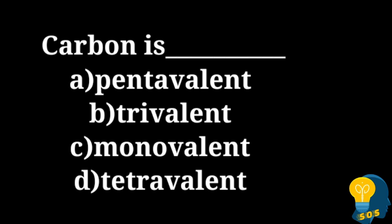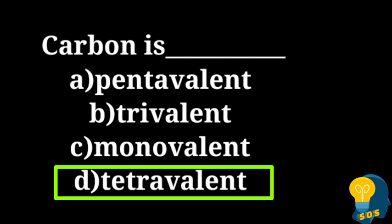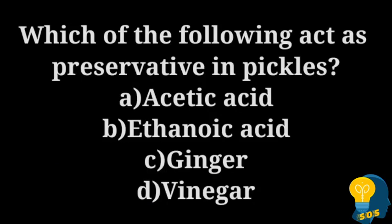The next question is: carbon is — option A: pentavalent, option B: trivalent, option C: monovalent, option D: tetravalent. The correct answer is option D, tetravalent. The valency of carbon is 4 and the valence electrons are also 4, so carbon can bond with 4 other atoms of carbon or monovalent atoms of other elements. As it has 4 valence electrons, it is tetravalent.